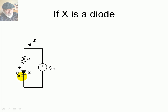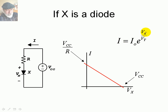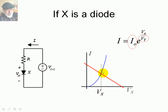Let's apply this technique to a diode circuit. Now element X is a diode. Again, we draw the load line of the external circuit — I versus Vx, the voltage in the diode — hitting the horizontal axis at the voltage source value and the vertical axis at Vcc divided by R. What does the diode have to say? The Shockley expression: the current in the diode is related to the voltage Vx according to an exponential expression, where I0 and Vt are constants. Plotting that expression, we find the point of operation — the voltage Vx in the diode and the current I.